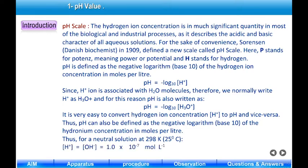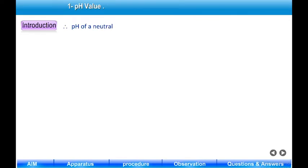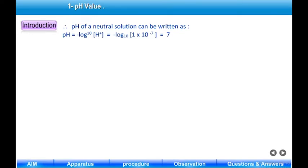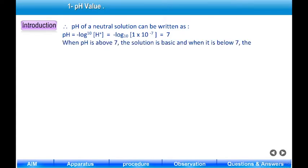For a neutral solution at 298 K or 25°C, [H⁺] = [OH⁻] = 1.0 × 10⁻⁷ mol/L. Since the hydrogen ion concentration equals the hydroxyl ion concentration, the pH of a neutral solution is: pH = -log₁₀[H⁺] = -log₁₀(1 × 10⁻⁷) = 7. When pH is above 7 the solution is basic, and when it is below 7 the solution is acidic.